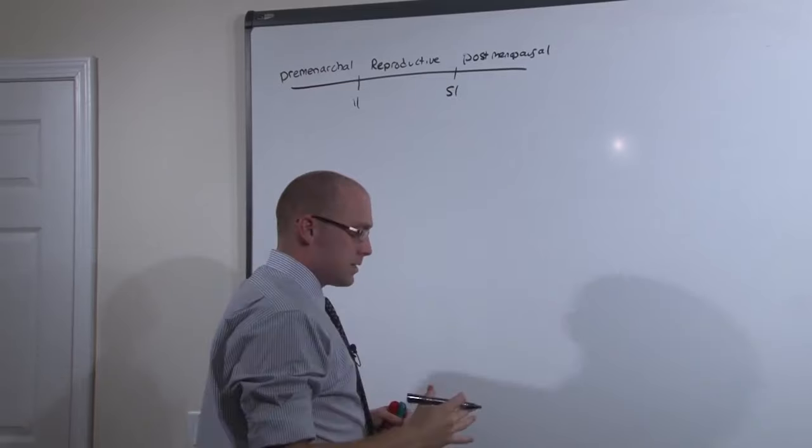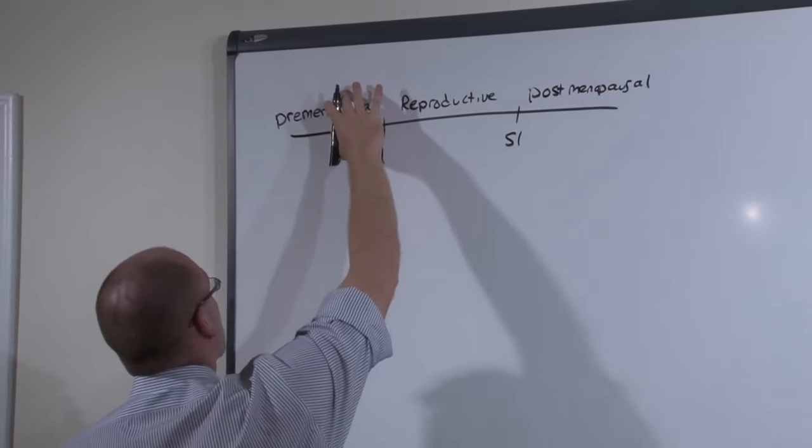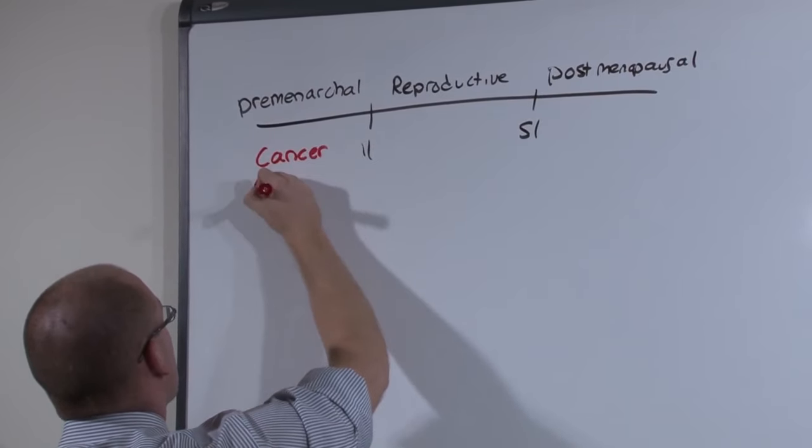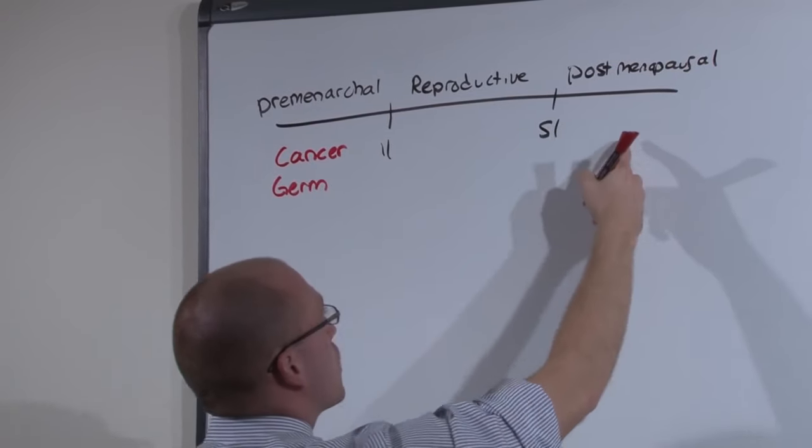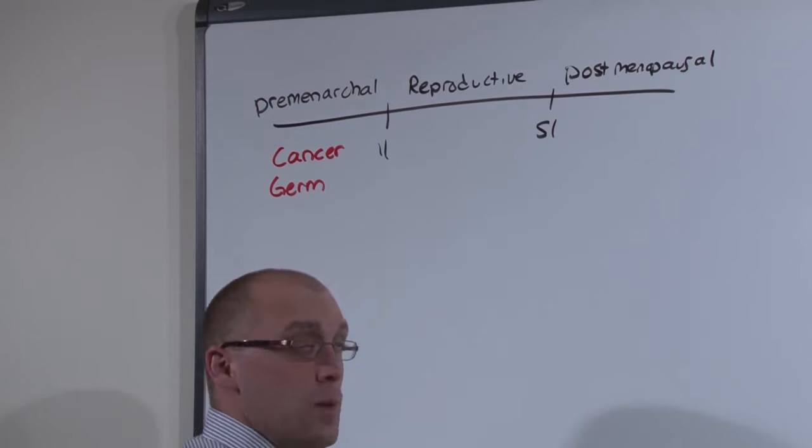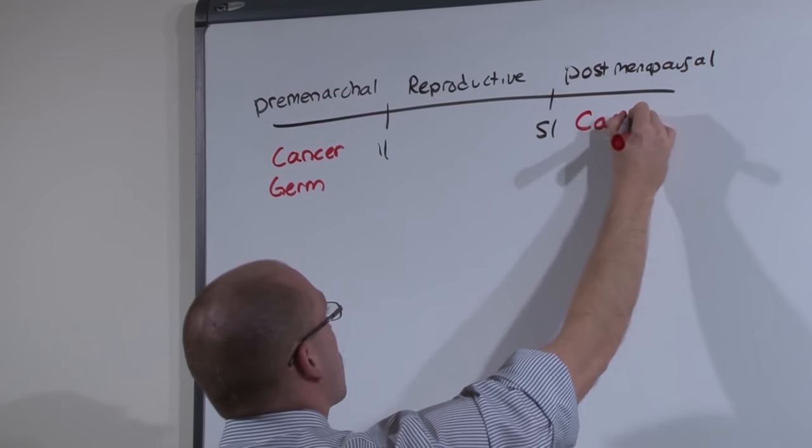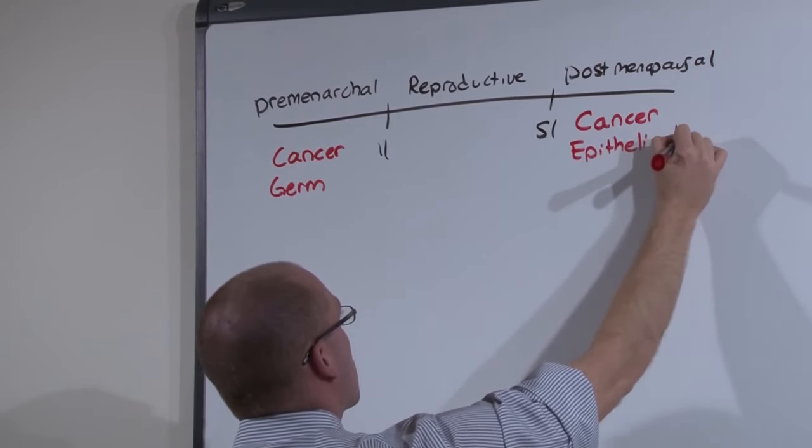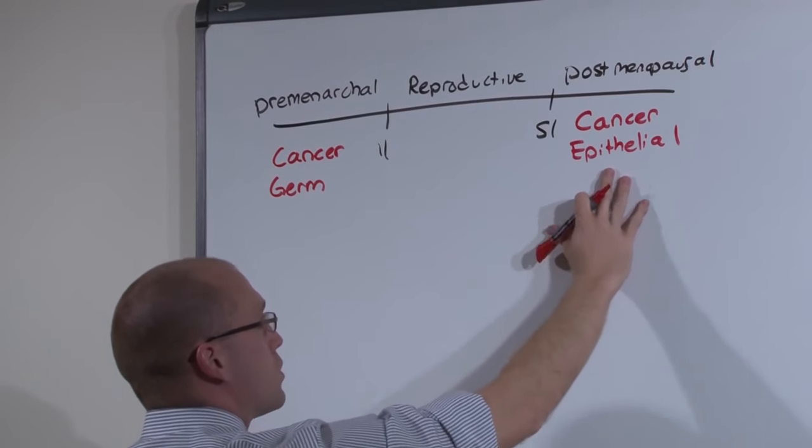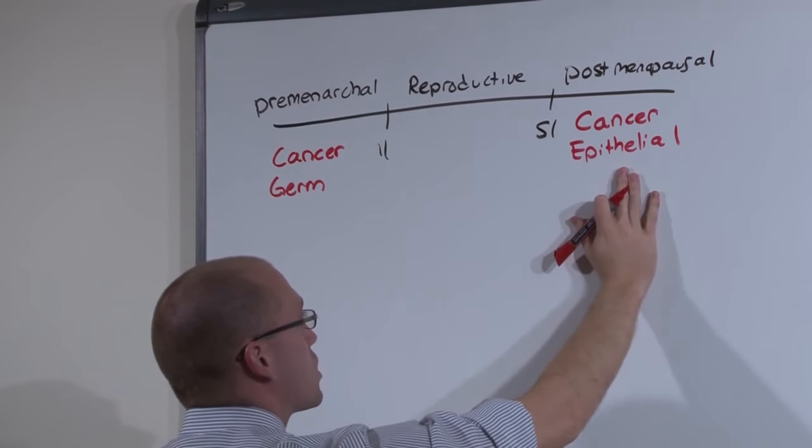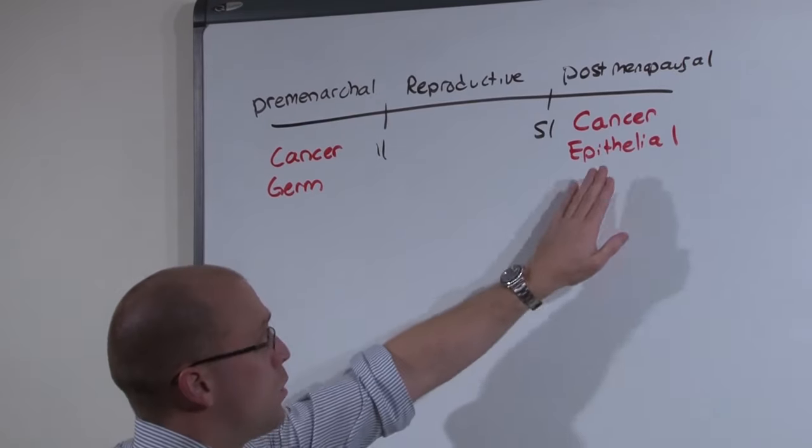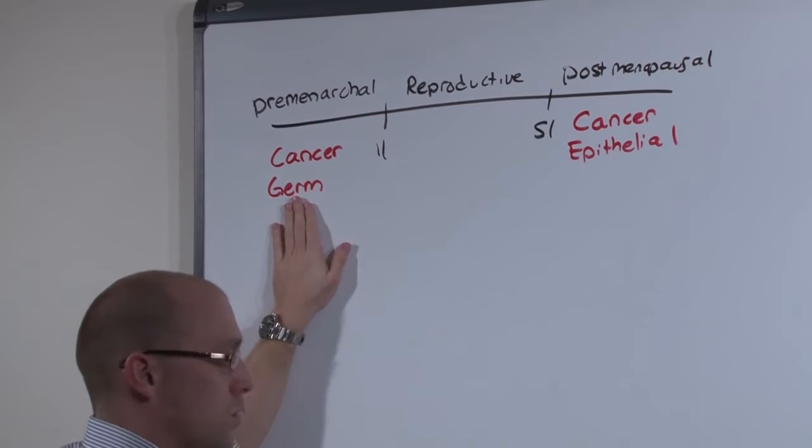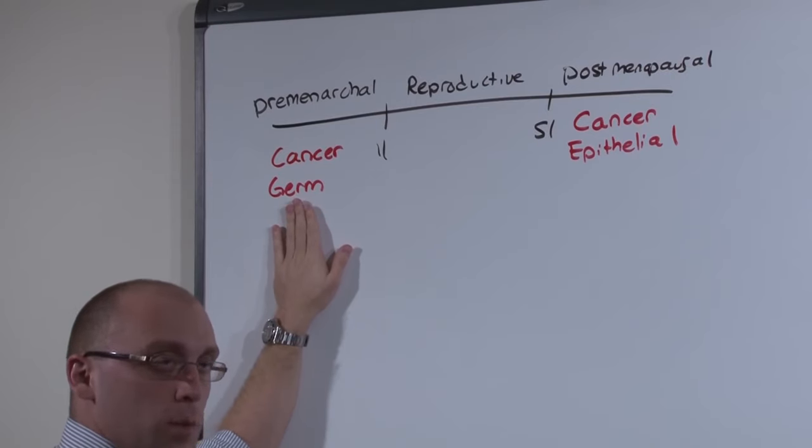Because for adnexal masses in the premenarchal age group, it is cancer until proven otherwise, generally germ cell cancers. In the postmenopausal age group, an adnexal mass is cancer until proven otherwise, generally epithelial cell. Epithelial cell has a very poor prognosis, generally found in stage 3B, and has to be treated with total abdominal hysterectomy, bilateral salpingo-oophorectomy and chemotherapy. Whereas germ cell cancers are generally benign and need only unilateral salpingo-oophorectomy.